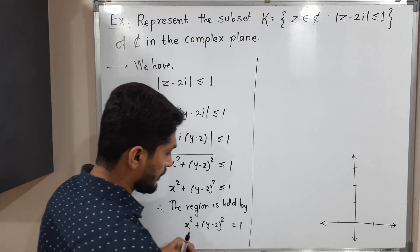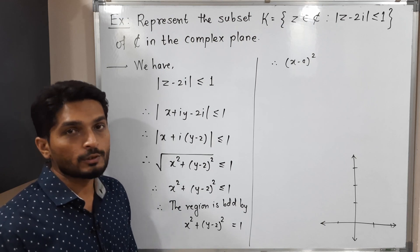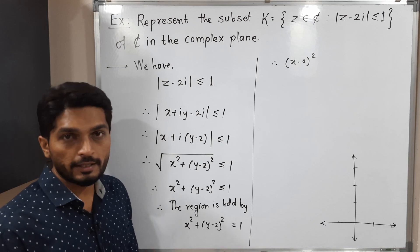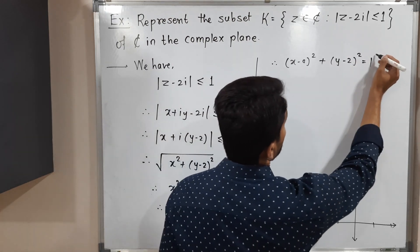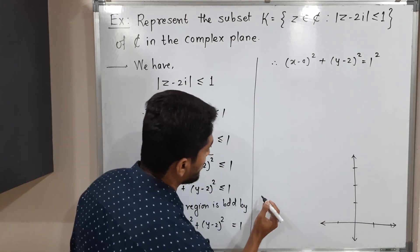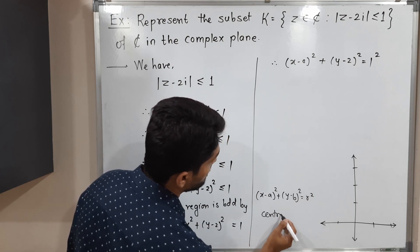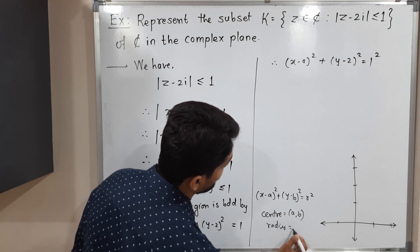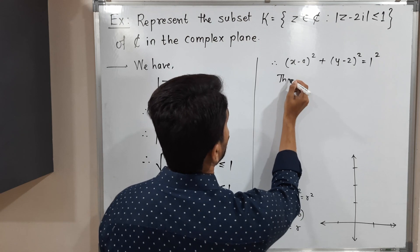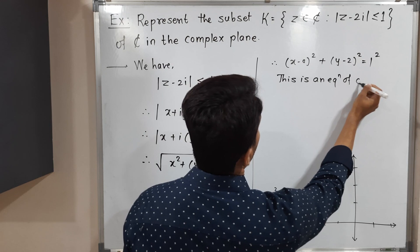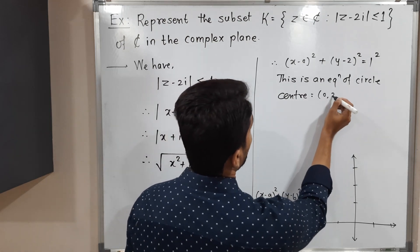Let me express it in standard form. We can write (x − 0)² + (y − 2)² = 1², since the standard form of a circle is (x − a)² + (y − b)² = r². So the center of this circle is (a, b) and its radius is r. Here the center is (0, 2) and the radius is 1.